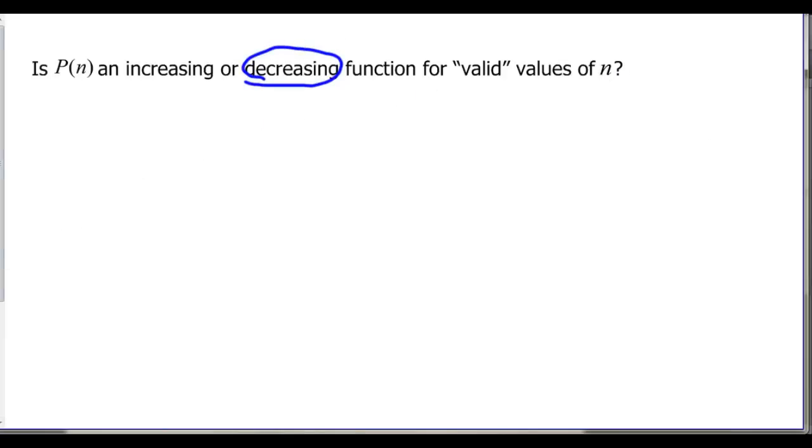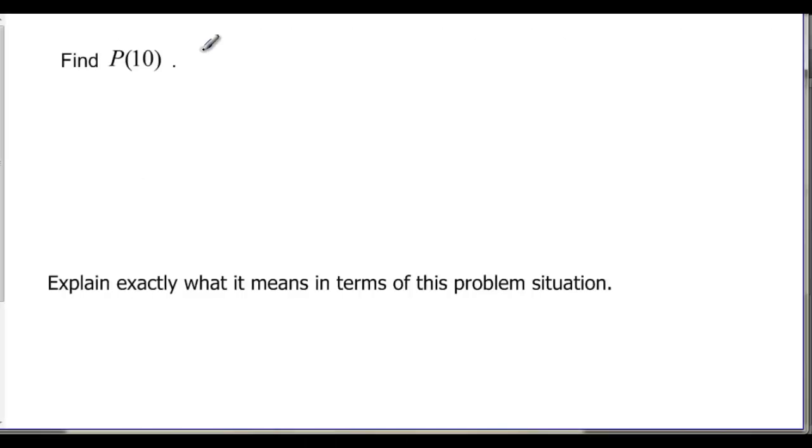Finding P(10), remember our function was 1800 divided by N, but the N is now my ten. And if I just cancel off the zeros to divide by ten, then I just end up with each person has to pay $180. Explain exactly what this means in this situation? That's exactly it. Each person pays $180.